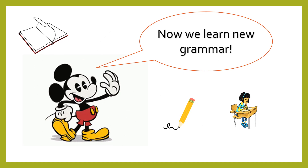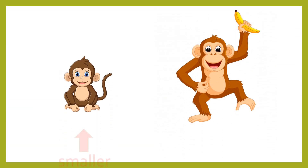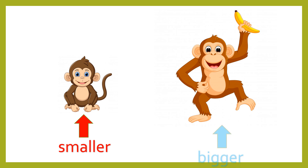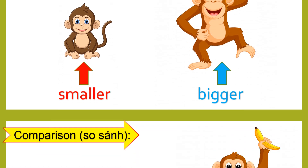Okay, now we learn new grammar. You look at the monkey on the left. It's a small monkey, so we say smaller. Now, everyone repeat: smaller. On the right, we have a big monkey, so we say bigger. Now, everyone repeat: bigger. Bigger. Bigger. Very good. Look.